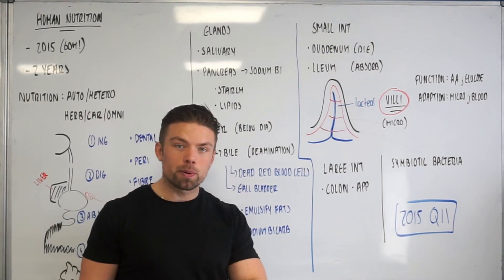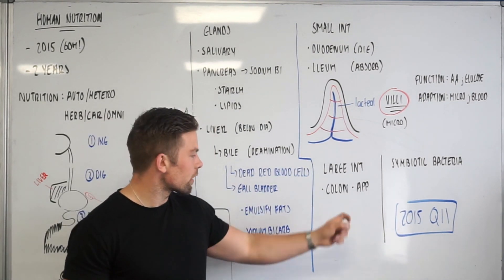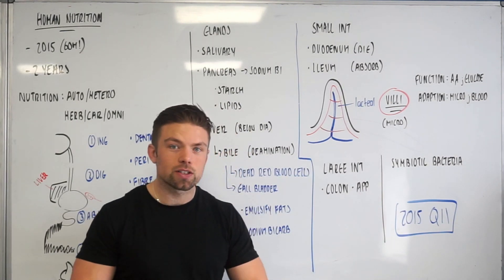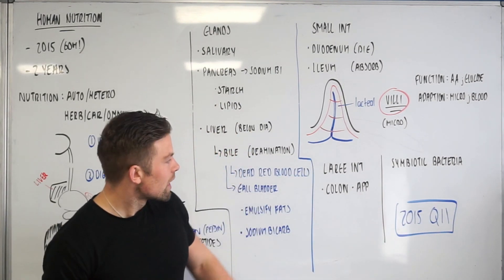Only two more things. The large intestine is actually made of four pieces, but the main important ones for us are the colon and the appendix. And the appendix we know ceases to have a function in humans.